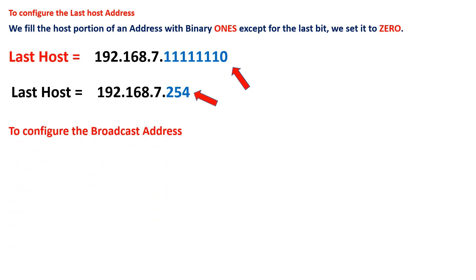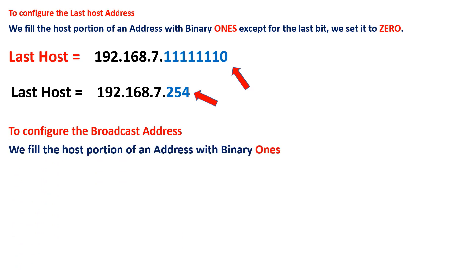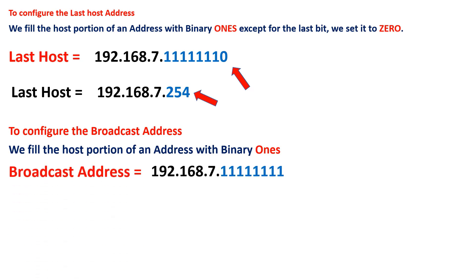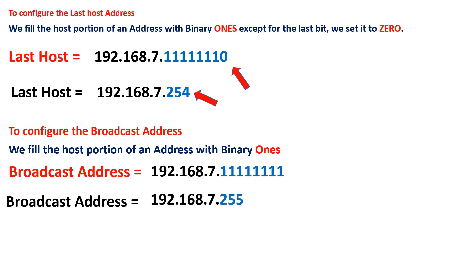To configure the broadcast address, the rule says we fill the host portion of an address with binary ones. The value of these binary ones is equal to 255, so our broadcast address is 192.168.7.255.